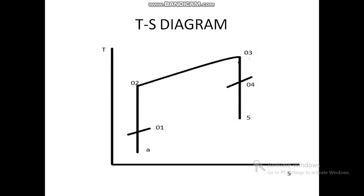The next diagram is the T-S diagram of a turbojet — an ideal turbojet T-S diagram. It looks like an open Brayton cycle. In this diagram, the x-axis represents entropy and the y-axis represents temperature. Entropy is the ratio of heat transfer with respect to absolute temperature. The A to 01 process is the diffuser, which partially increases pressure; whenever pressure increases, temperature also increases, but it comes under the isentropic process so entropy remains constant.